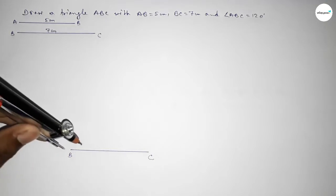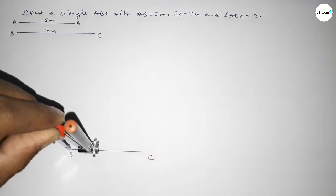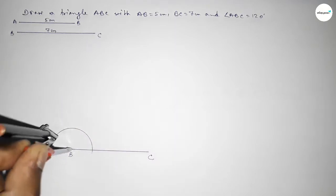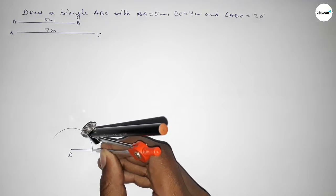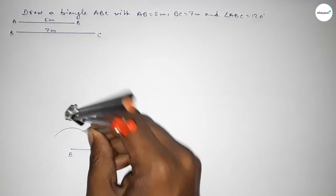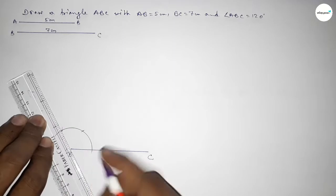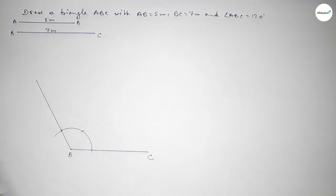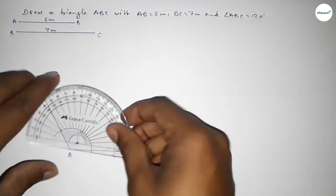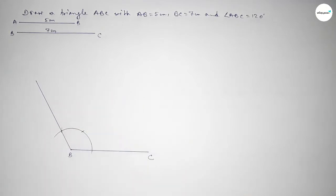Next we have to draw a 120 degree angle at point B. Putting the compass on point B, taking any length, and drawing an arc. With the same length, putting the compass at that point and cutting here, then putting the compass again and cutting here, so both curves intersect at a point. Joining this line to get the 120 degree angle — checking this angle, it is perfectly 120 degrees.